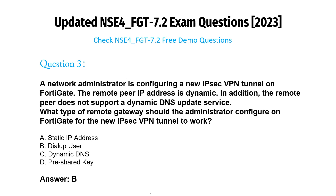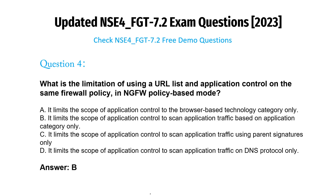Question 3: A network administrator is configuring a new IPsec VPN tunnel on FortiGate. The remote peer IP address is dynamic, and the remote peer does not support a dynamic DNS update service. What type of remote gateway should the administrator configure? A) Static IP address. B) Dial-up user. C) Dynamic DNS. D) Pre-shared key. Answer: B.